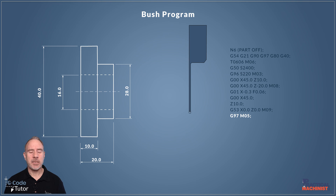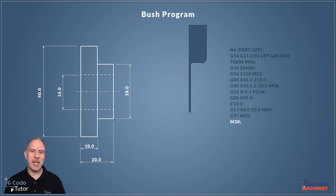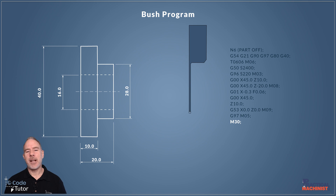M05 turns off the spindle — this works whether we're in M03 or M04 direction. I'm finishing here with M30 rather than M01, because this is our last tool and the machine has finished its cycle. M30 stops the cycle and rewinds it back to the start. It will stop there unless we have the continuous cycle button pressed, in which case the next part will start automatically.